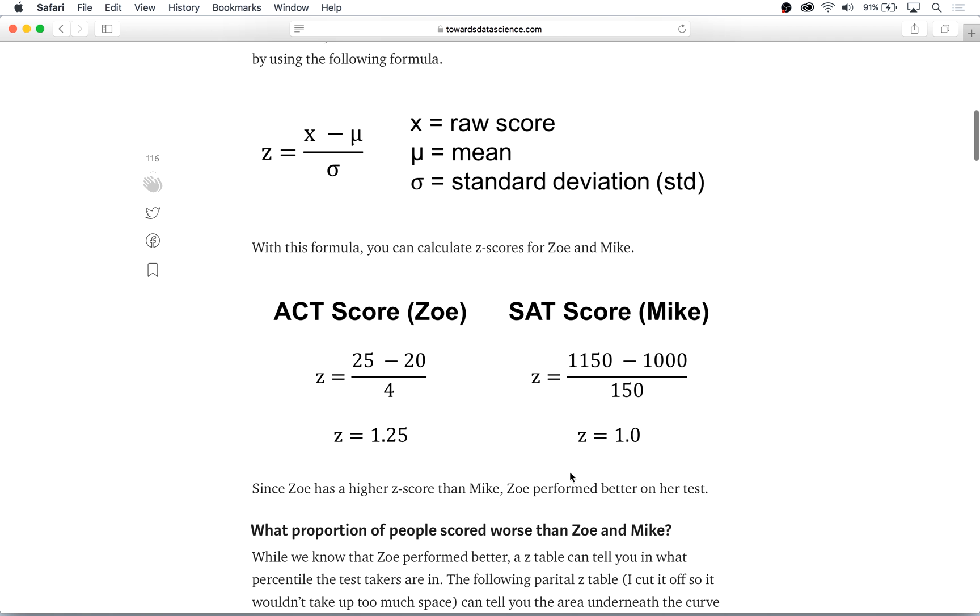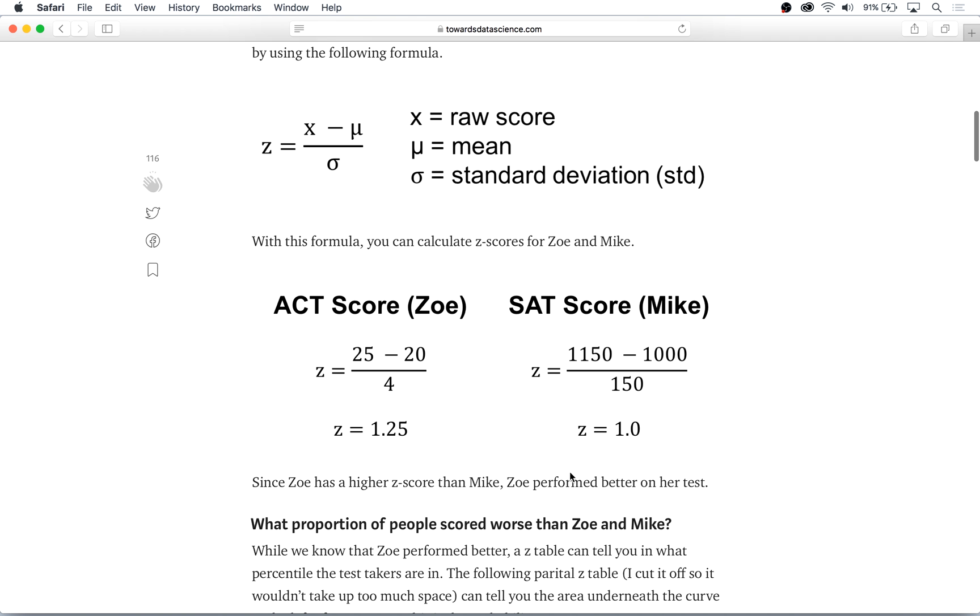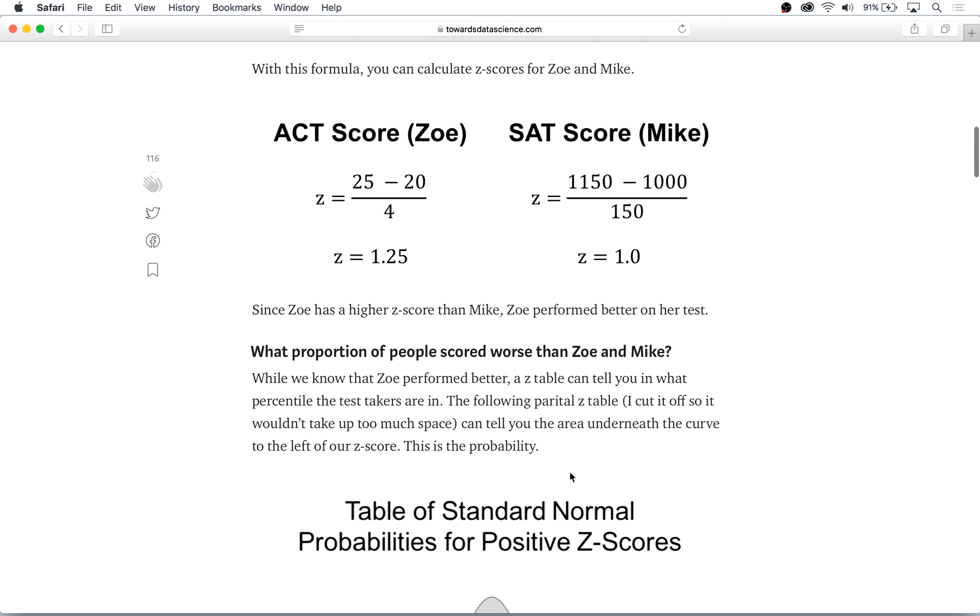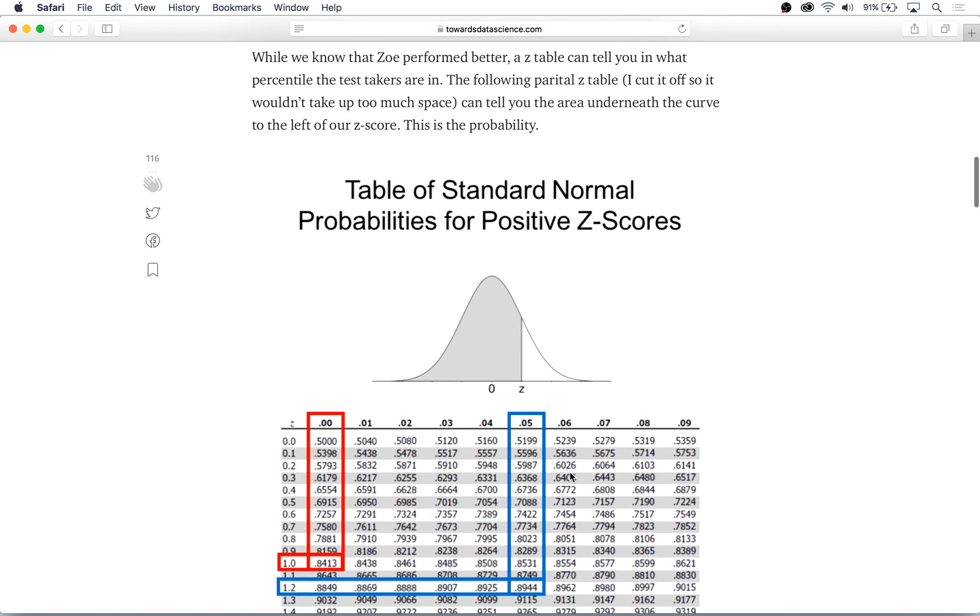And while we know Zoe performed better, a z-table can tell us in what percentile the test takers are in. And we can do this with the following partial z-table. The values in this table are just the area underneath the curve to the left of our z-score, and this is also known as the probability.